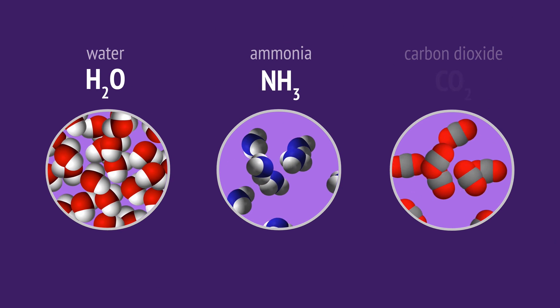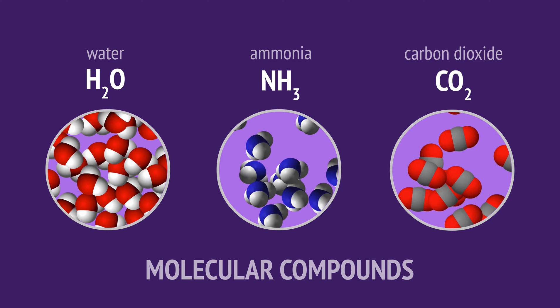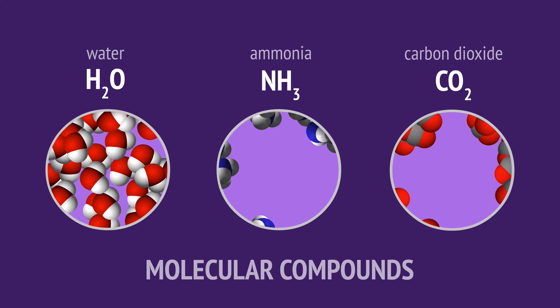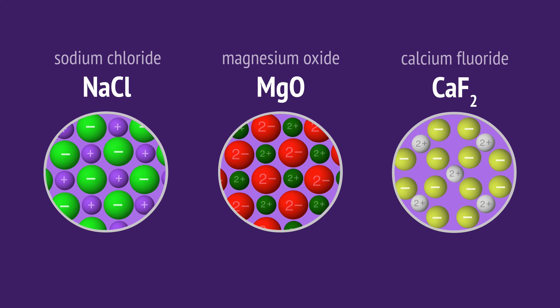Water, ammonia and carbon dioxide are molecular compounds because the elements have combined in fixed ratios to form molecules. Elements can also combine to form ionic compounds where ions bond in fixed ratios to build a lattice.